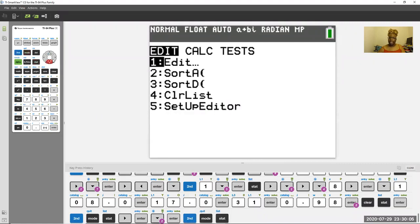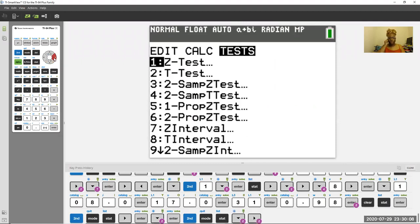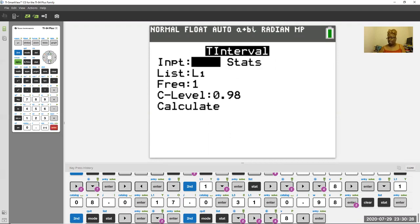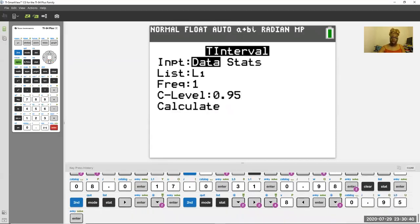So at the calculator in order to find out what your answers are going to be, you're going to go to stat, and then you're going to go over to test. And then you're going to do a T interval. You're looking for a T interval, not a T test. So that's going to be number eight. Now the question is, can we put in statistics? We can put in statistics because we know it, but we're going to go over here and go to data. Why? Because we have data in our calculator in L1. So we have data in L1. Don't touch the frequency. And then our confidence level was 0.95. And then we're going to calculate it.